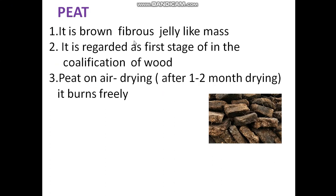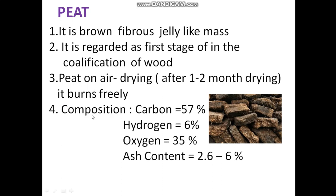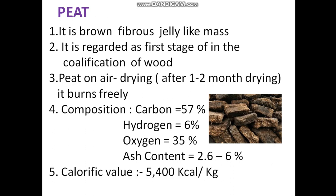Peat on air drying, after 1 to 2 months, it burns freely. The composition is: carbon 57%, hydrogen 6%, oxygen 35%, and ash content 2.6 to 6%. The calorific value — when we burn the peat, we get 5,400 kilocalories per kg.